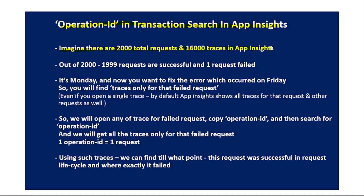One request can have multiple traces. Out of 2000 requests, 1999 are successful and there is one failed request. Now it's Monday and you want to fix the error which occurred on last Friday — you want to find the traces only for that failed request.